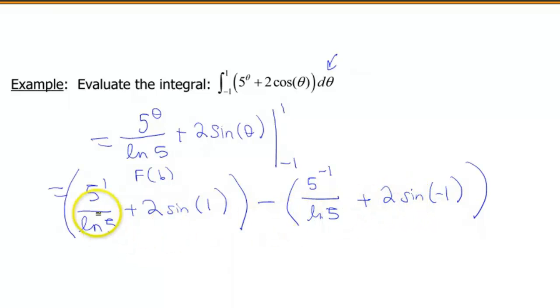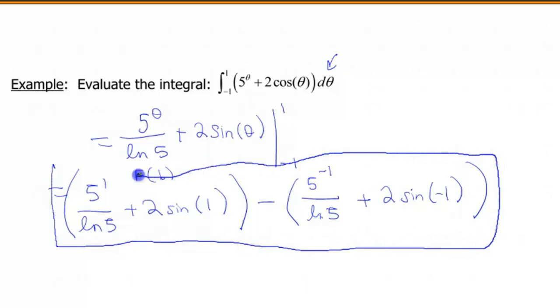And unfortunately, I don't think there's much prettying up we can do with this one. So this would be one way that we could leave our answer. But if you wanna go ahead and approximate that, when I threw that into my calculator, I got 6.35. And again, I also checked to make sure my function was continuous. And yes, I don't have any problems with 5 to the theta, or I don't have any problems with 2 cosine theta, so we are good to go.